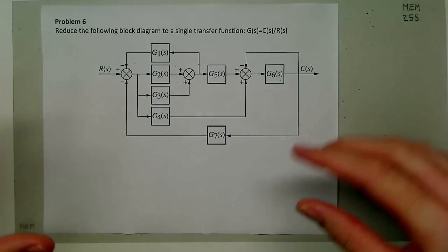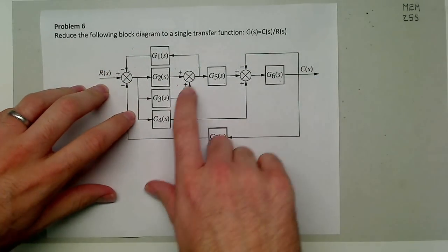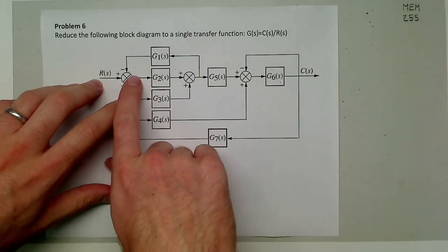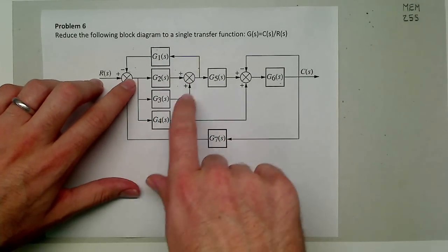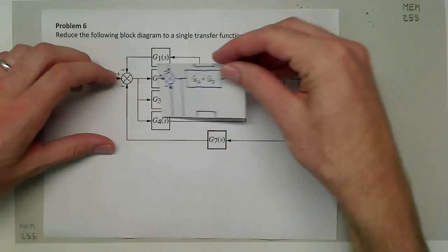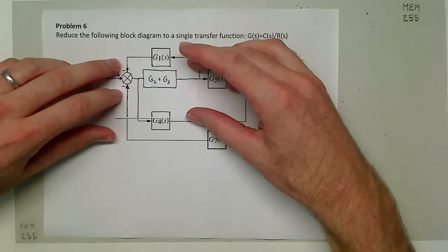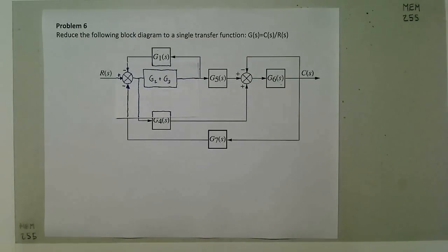The first thing I'm going to do on problem six is take these two blocks g2 and g3 and combine them. They're in parallel, so I can just replace that with the sum of the two like so. That was my first step.